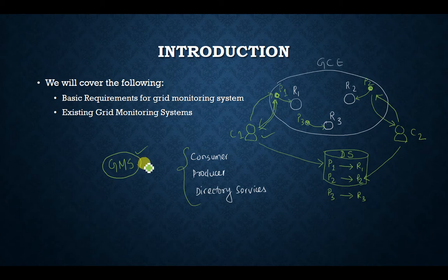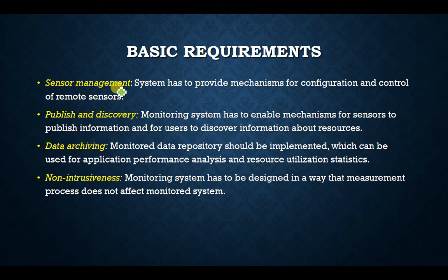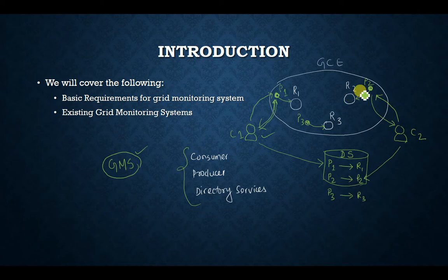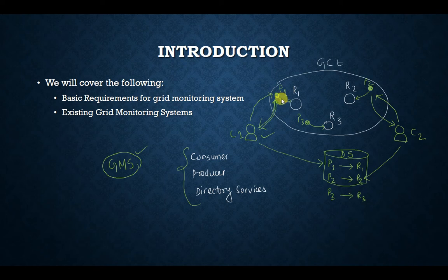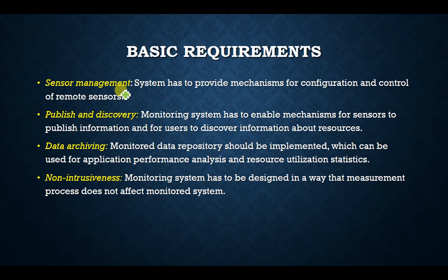The first feature a GMS must have is sensor management. In the architecture, there are several sensors — the producers — which generate events by monitoring resources. The GMS must be able to manage all sensors remotely and provide mechanisms for configuration and control of remote sensors.